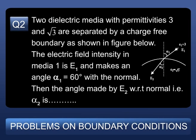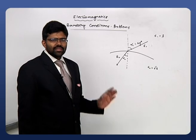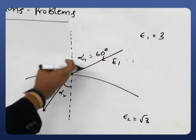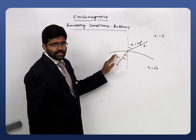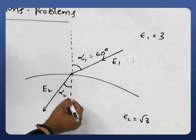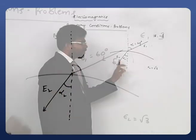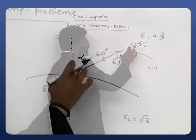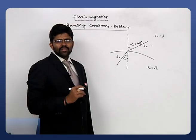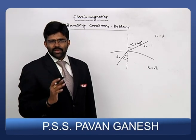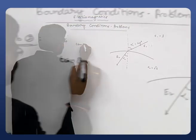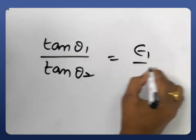Problem 2: Two dielectric media with permittivities ε₁=3 and ε₂=√3 are separated by a charge-free boundary. The electric field intensity in medium 1 makes an angle α₁=60° with the normal. Find the angle α₂ that E₂ makes with the normal. The electric field refracts at the boundary, with α₁ as the angle of incidence and α₂ as the angle of refraction.